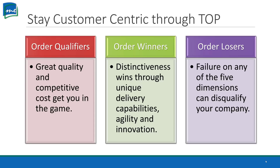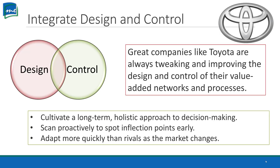If we don't meet any of those dimensions the customer values, they won't even consider us for that purchase — we lose the order. There is no second place: you're either the winner or you're not. We also need to integrate design and control. Companies like Toyota are always tweaking and improving design to control their value-added networks and processes — always looking for something that can add value to the customer, increase efficiency, and eliminate waste.